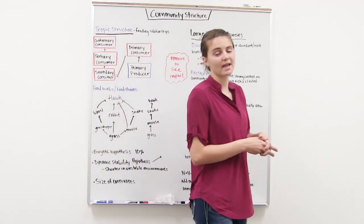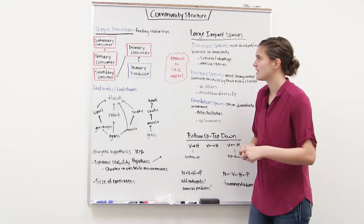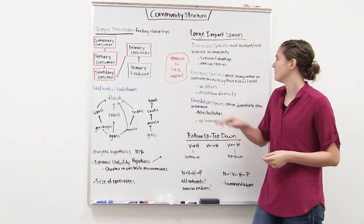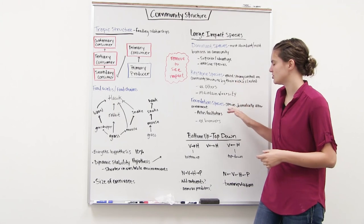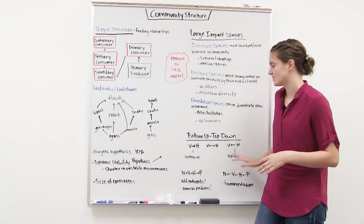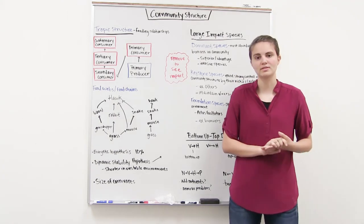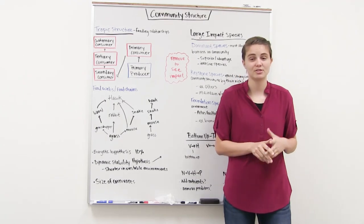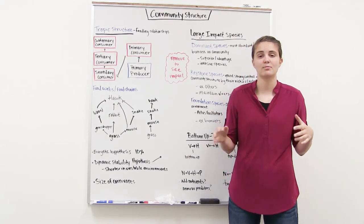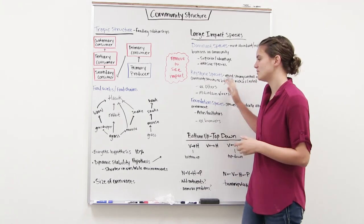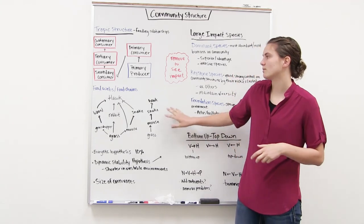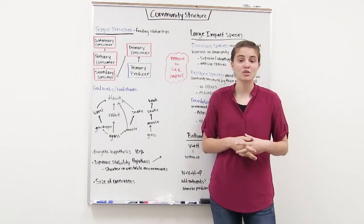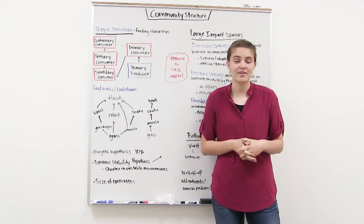That's all for today. I hope it was helpful and that you better understand trophic structure and food webs, dominant species, keystone species, foundation species, and bottom-up and top-down controls. Make sure you're prepared to answer questions where you're given examples and have to identify the type of species or whether something is a primary, secondary, or tertiary consumer. Thank you so much for watching and have a fantastic day.